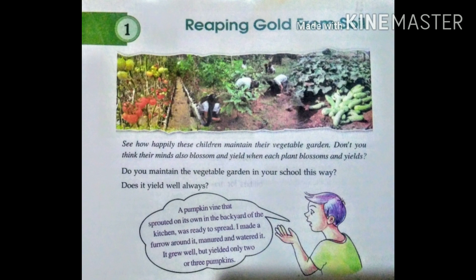A pumpkin vine that sprouted on its own in the backyard of the kitchen was ready to spread. I made a furrow around it, maintained and watered it. It grew well but yielded only 2 or 3 pumpkins. Did you listen to what Babu said? Why do you think the plant did not produce more fruits?